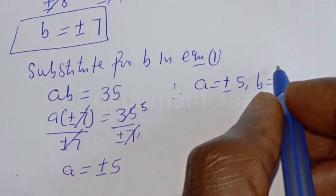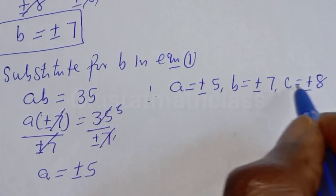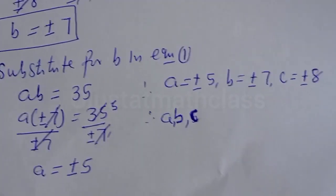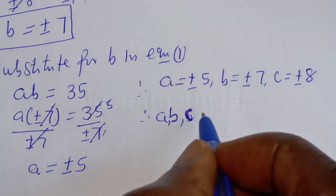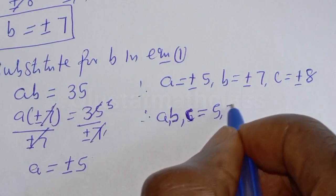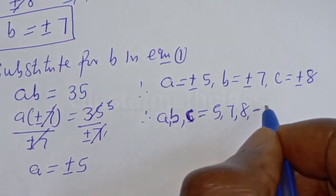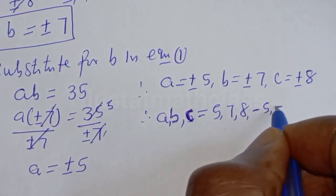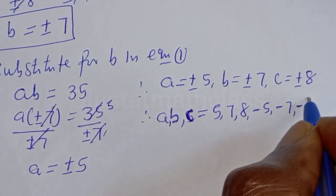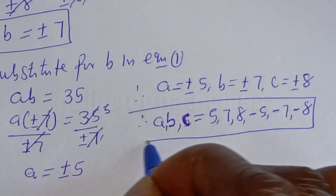Therefore, A is equal to plus or minus 5, B is equal to plus or minus 7, and C is equal to plus or minus 8. Our final answers are: (A, B, C) equals (5, 7, 8) or (minus 5, minus 7, minus 8). This is the final answer.